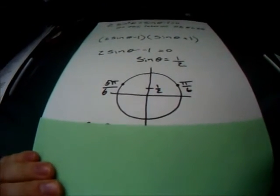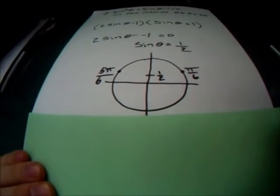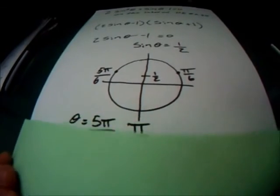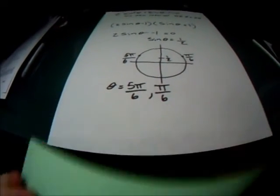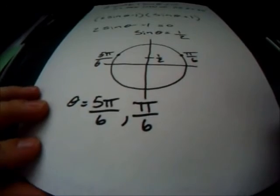So if we do this unit circle, we can find that y is positive 1 half at pi over 6 and 5 pi over 6. So for this part of the equation, theta equals 5 pi over 6 and pi over 6.